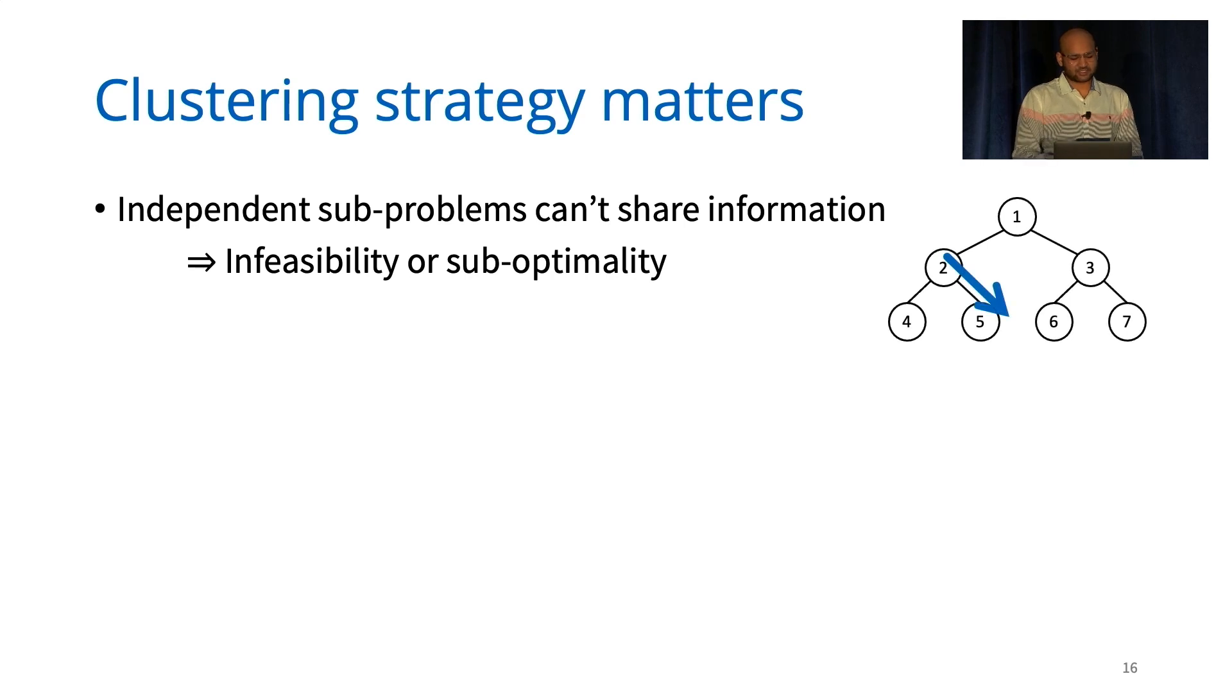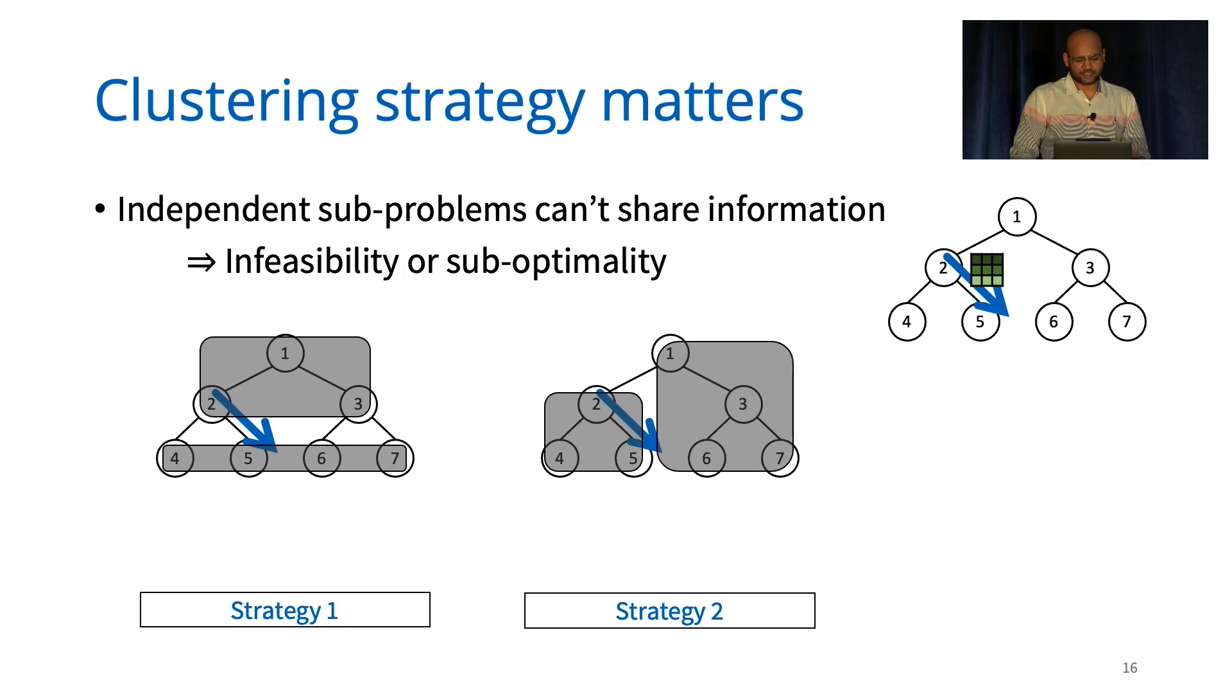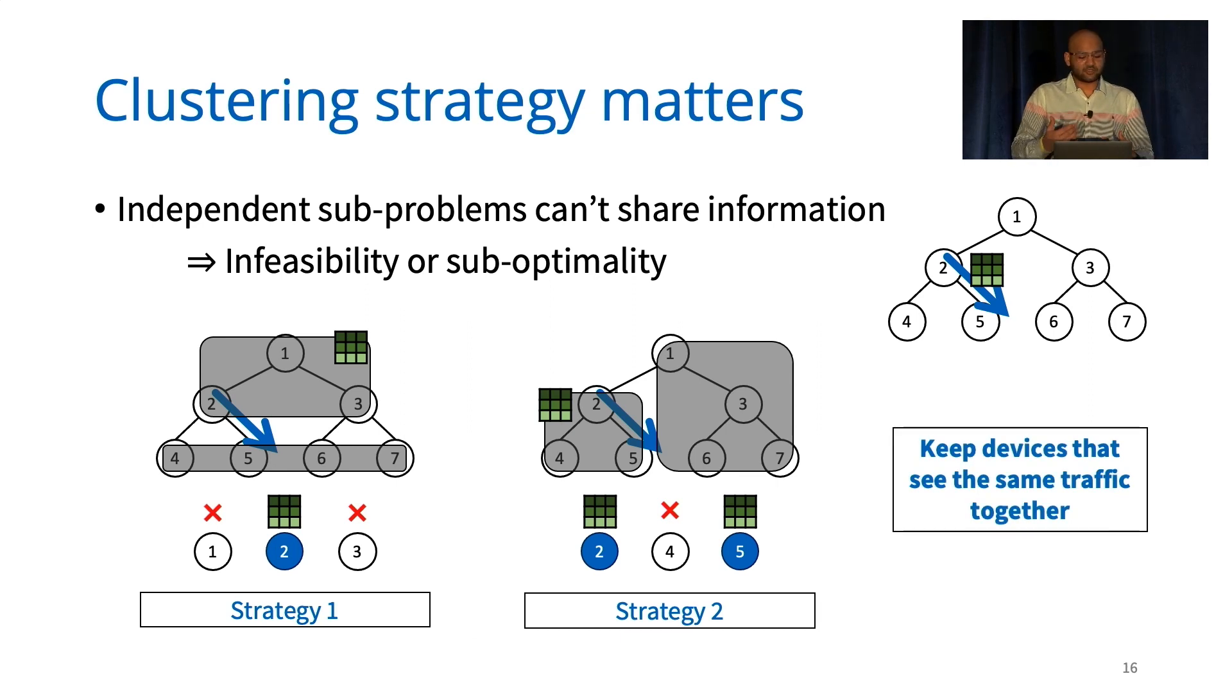To demonstrate this, consider a stoid topology of seven devices with a flow from device two to device five. Let's say we want to monitor this flow using a sketch. And consider the following two strategies, where in strategy one, we are dividing the top and bottom half into clusters, and in strategy two, we're dividing left and right half. In strategy one, let's say the sketch is first assigned to the top cluster. Now, when the optimizer is run within that cluster, only device two sees the traffic relevant for this sketch. And so the optimizer will have to place the sketch on that device. Whereas with strategy two, the sketch will first be assigned to the left cluster. And within this cluster, the optimizer retains its flexibility to place the sketch on either of the two devices that see the relevant traffic. So we'd like to be able to keep devices that see the same traffic in the same cluster so that we can minimize the loss in optimality that our clustering heuristic causes.